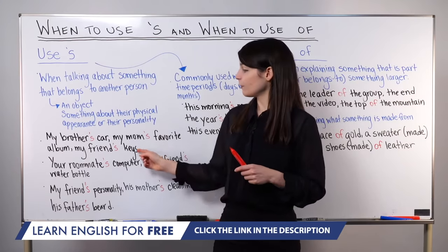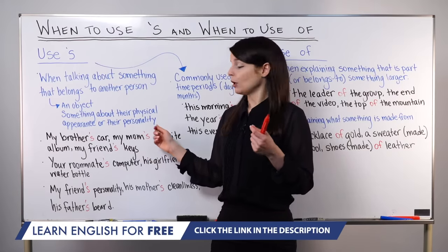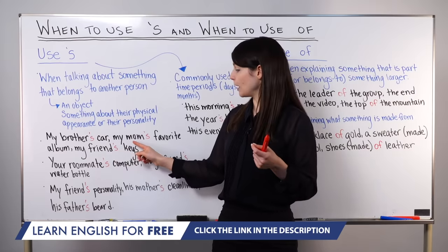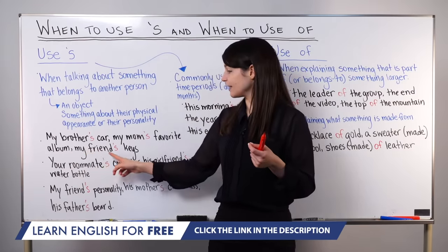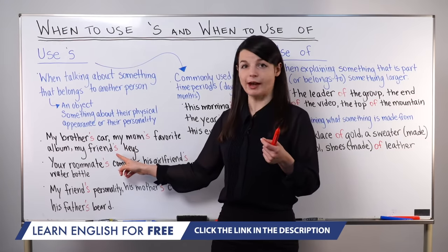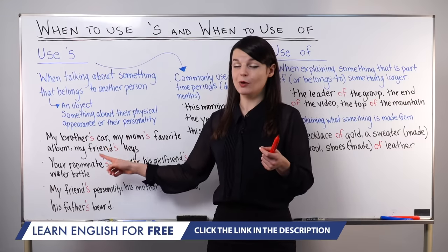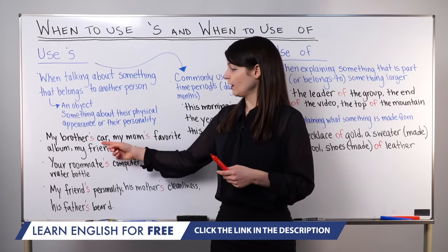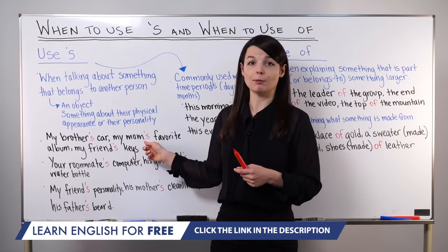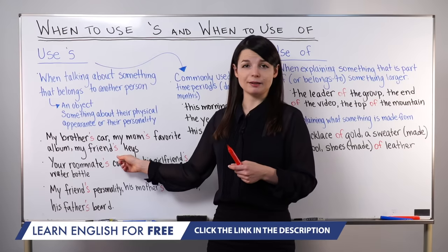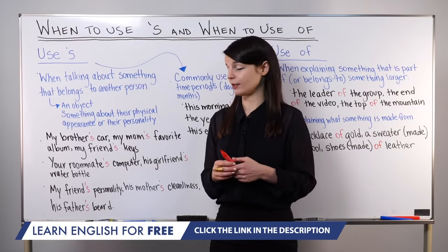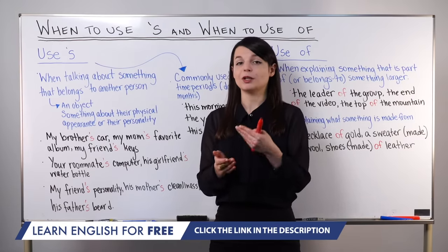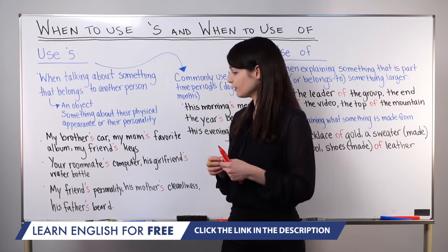This group of examples features apostrophe S including an object. For example: my brother's car, my mom's favorite album, or my friend's keys. We use apostrophe S because this is an object that belongs to a person. If I used 'of' in these sentences, it would sound very unnatural — for example, 'the car of my brother' or 'the favorite album of my mom' or 'the keys of my friend.' So because we're talking about objects that belong to a person, use the possessive form, apostrophe S.